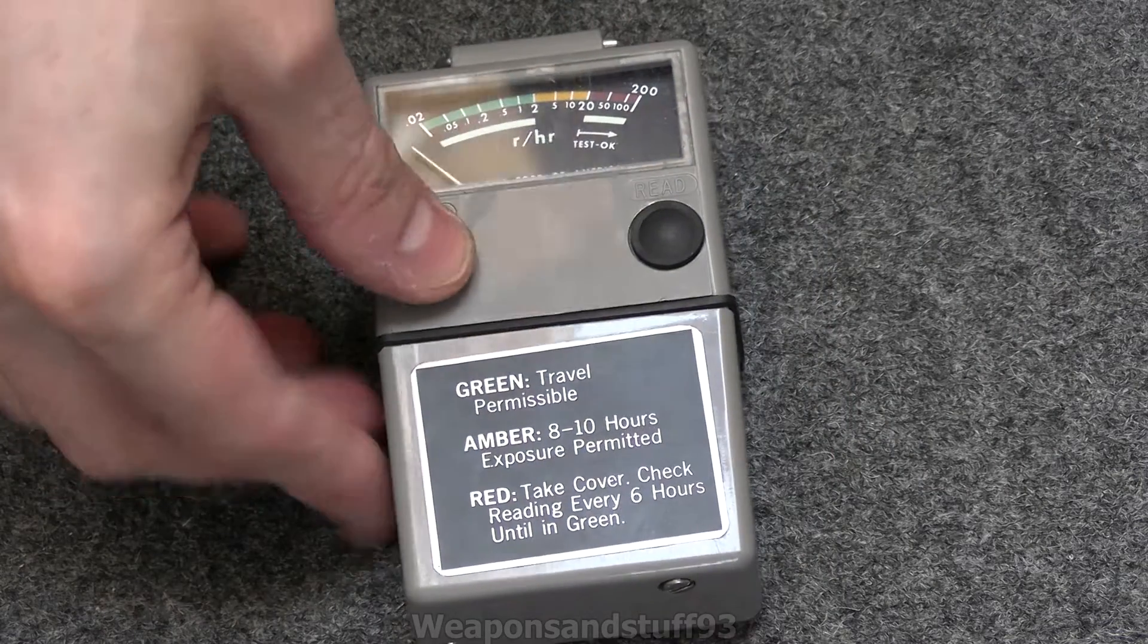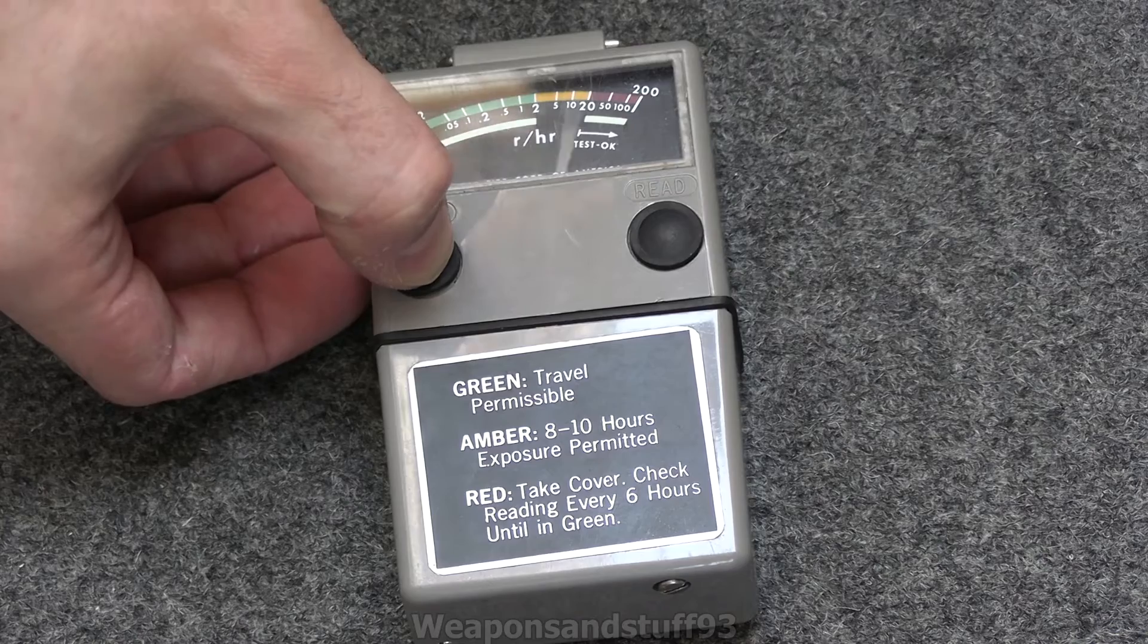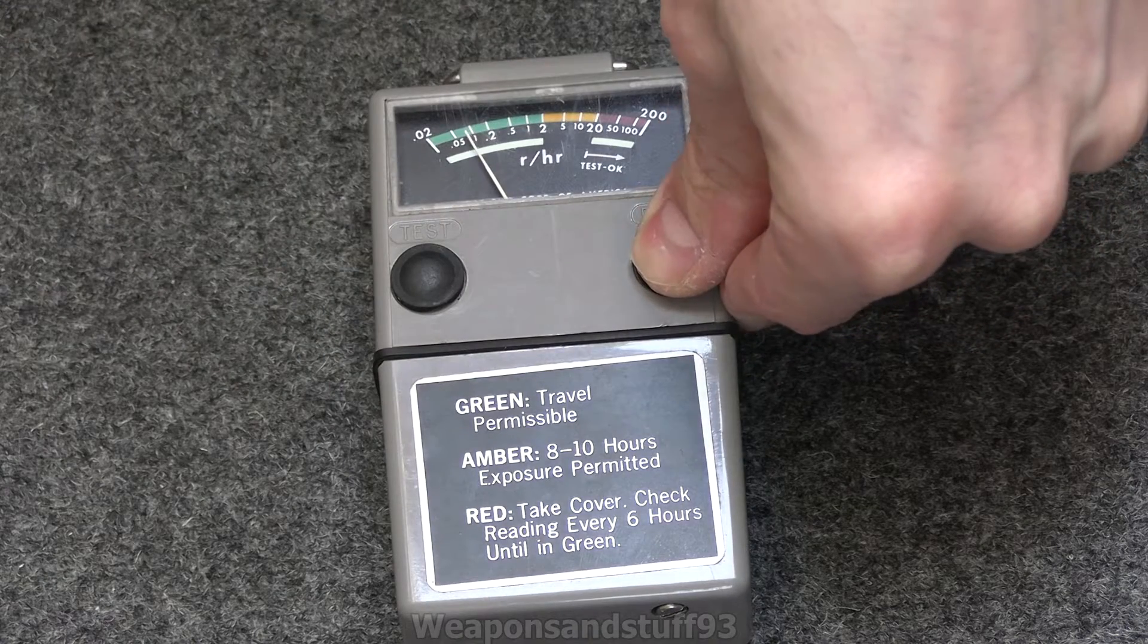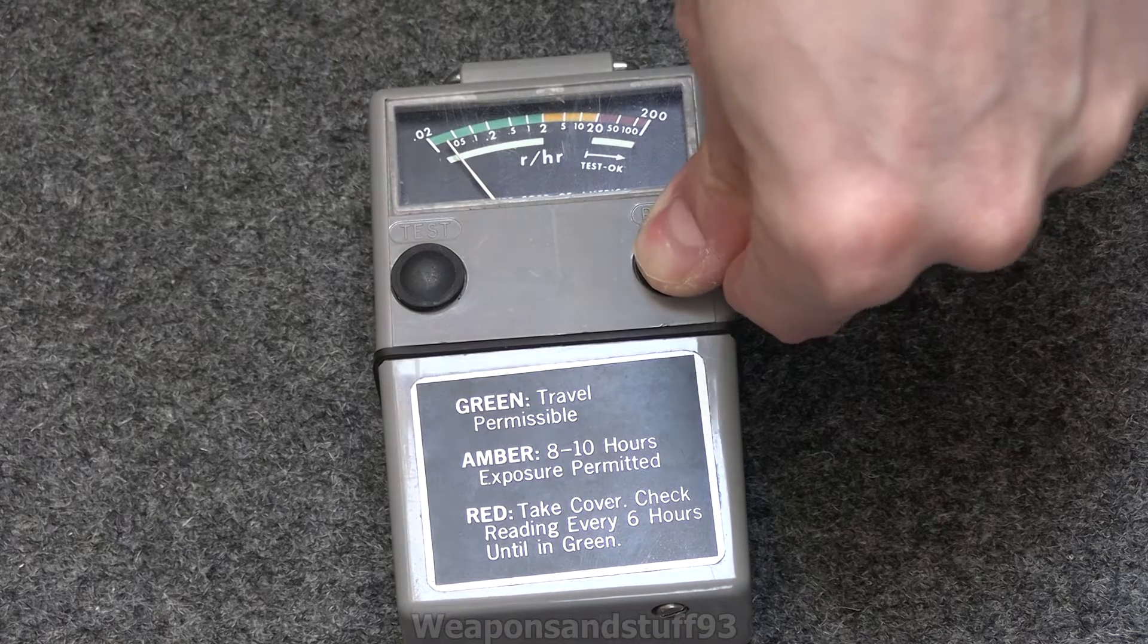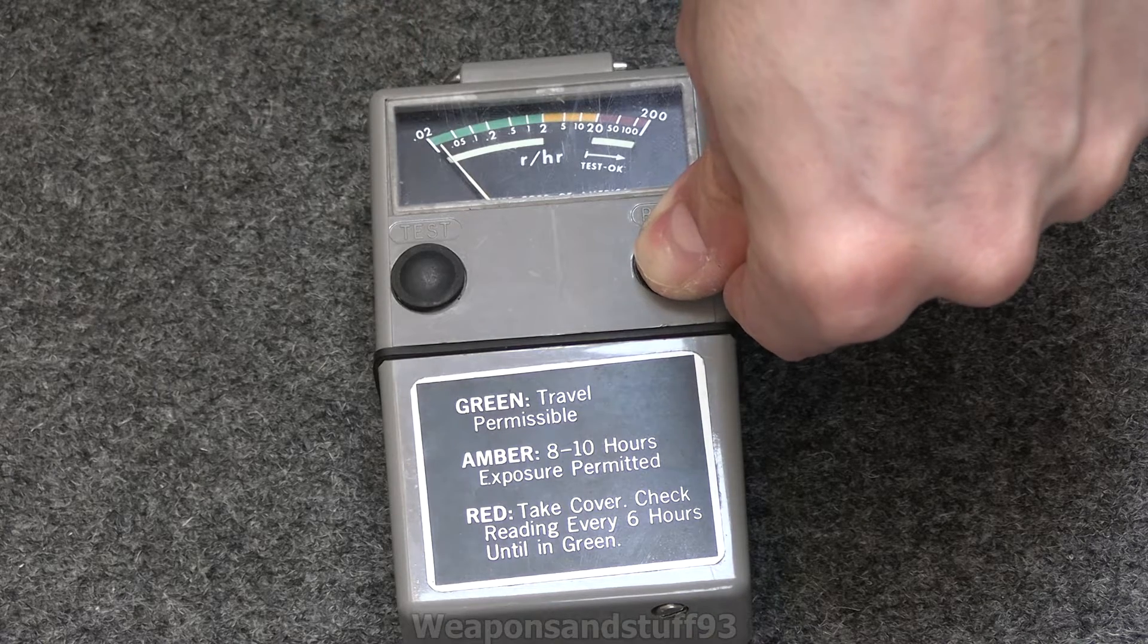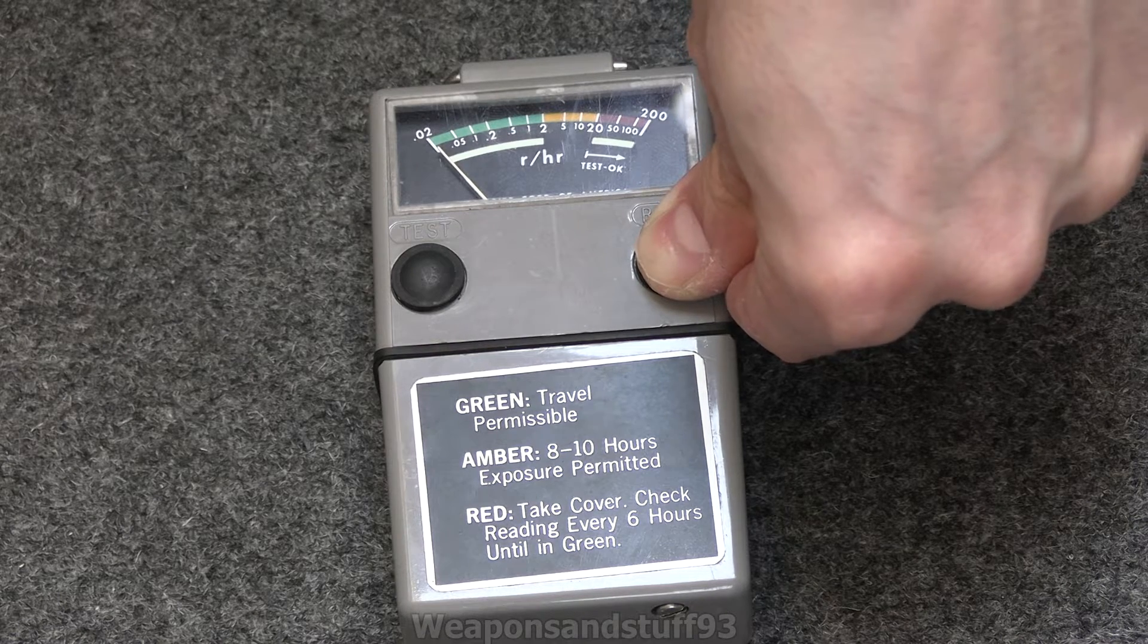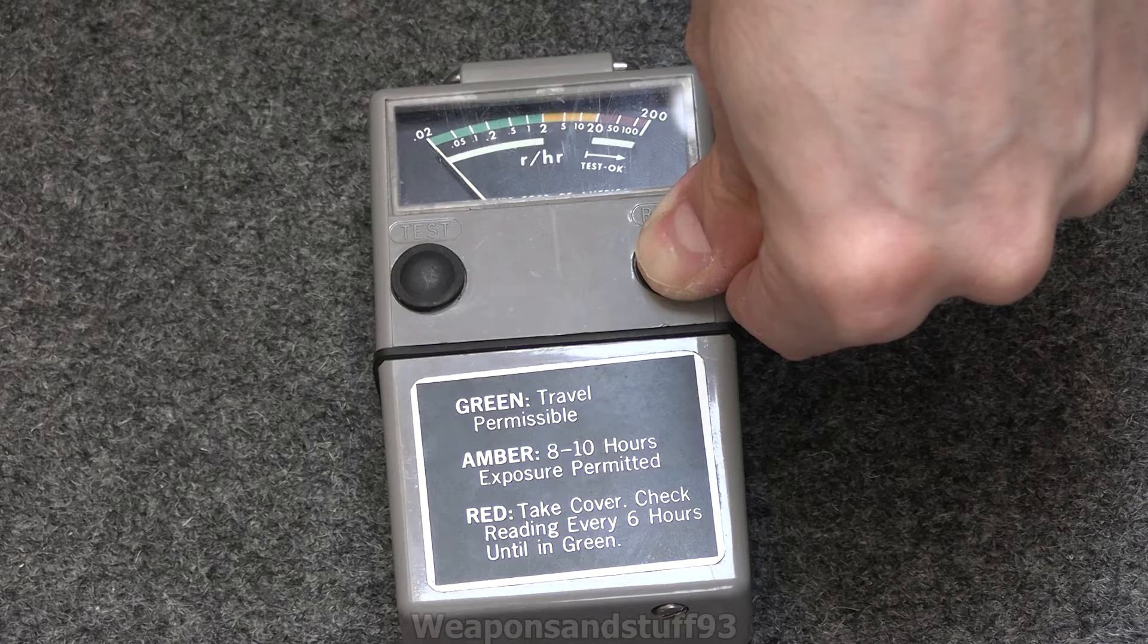There's a test function which basically just short circuits the device to check that all the electrics work, which is pretty standard of ion chambers. Then you've got your read button, that's the more interesting one. That powers up the ionization chamber, you hold it down for a few seconds before you're meant to take the reading because it needs to stabilize the voltage. What should happen is that the needle should end pretty much at the bottom of the reading range, and then once you start exposing it to radiation while holding it down, the needle should go up. That's all in theory. We're going to test it in a minute and see if we can get a reading to work on it.